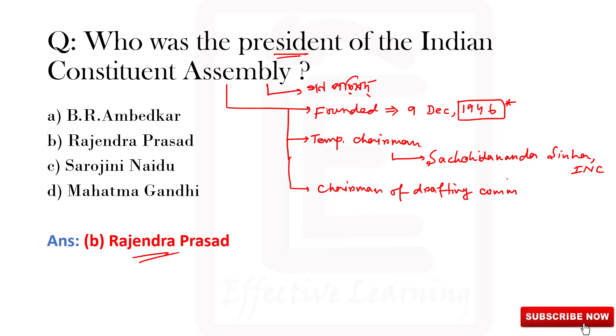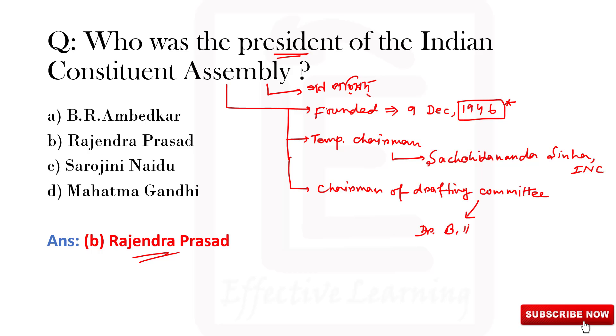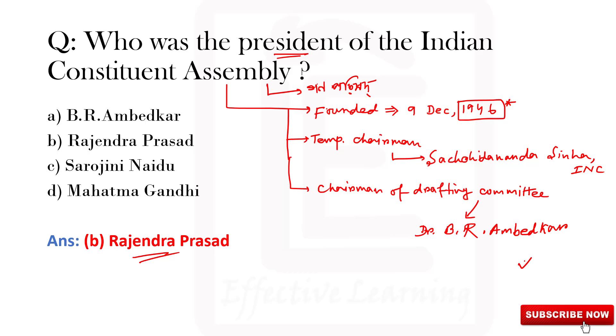The temporary chairman of the Constituent Assembly was Sachchidananda Sinha. The Chairman of the Drafting Committee was Dr. B.R. Ambedkar.